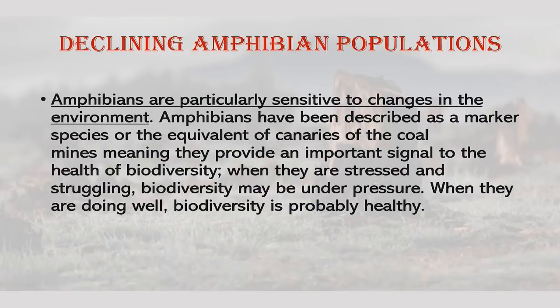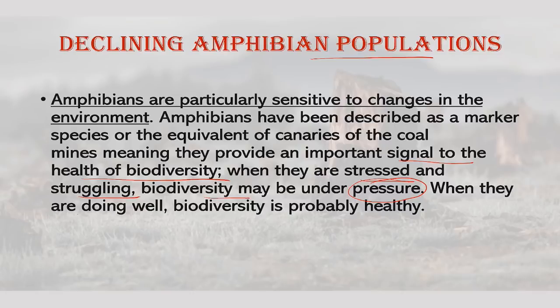Next is declining amphibian populations. Amphibians are particularly sensitive to changes in the environment and have been described as a marker species, or the equivalent of canaries in coal mines, meaning they provide an important signal to the health of biodiversity. When they are stressed and struggling, biodiversity may be under pressure. When they are doing well, biodiversity is probably very healthy.